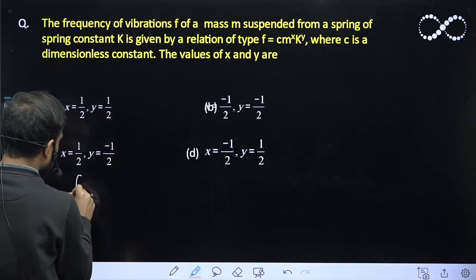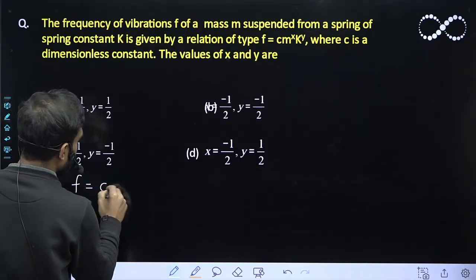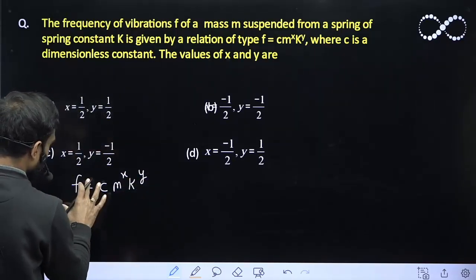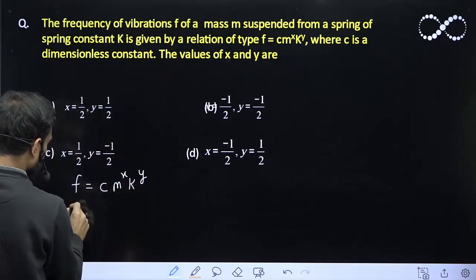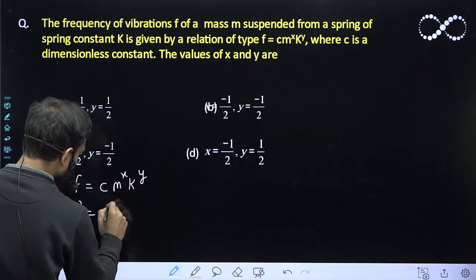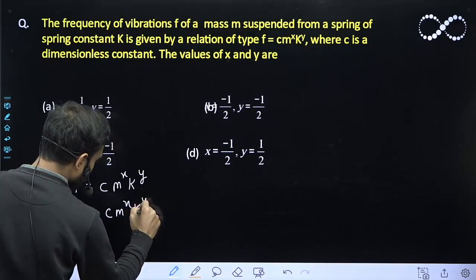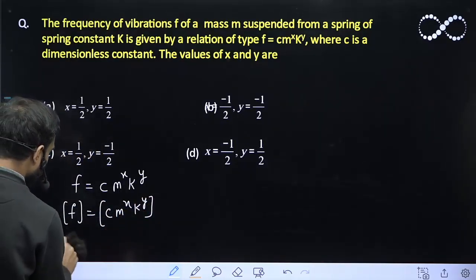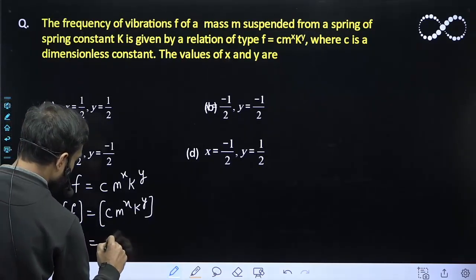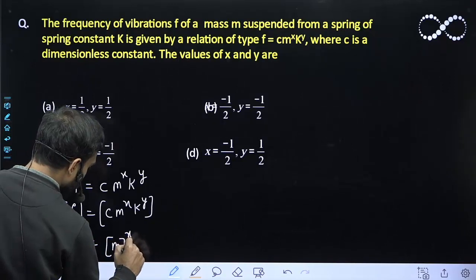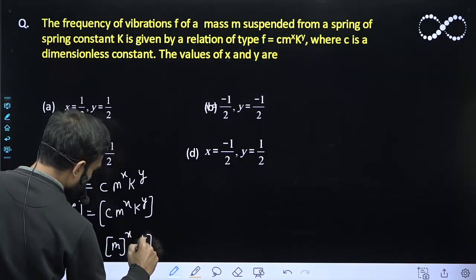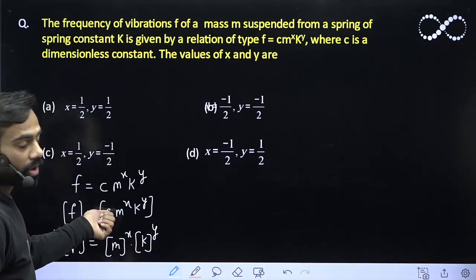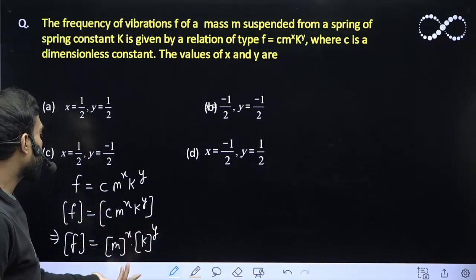From here the relation is given: f is equal to c times m raised to power x and k raised to power y. So the dimension of f will be equal to the dimension of c times m raised to power x times k raised to power y. Since c is a dimensionless constant, anything dimensionless has a dimension of 1, so that factor drops out.